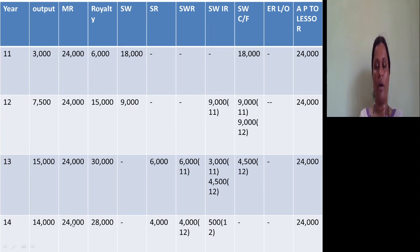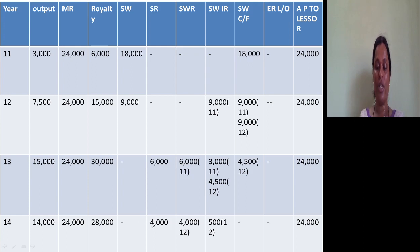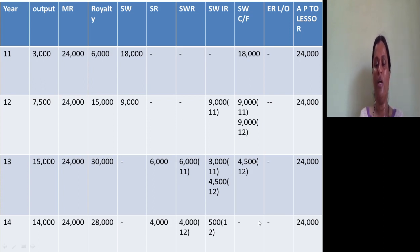Last year: royalty ₹28,000 is more than minimum rent ₹24,000, giving an excess of ₹4,000. The carry forward amount is ₹4,500, but excess is only ₹4,000. So recovery is ₹4,000. This is the last year to recover 2012's short working, but there is a shortage of ₹500, so ₹500 is irrecoverable. The amount payable is ₹24,000.